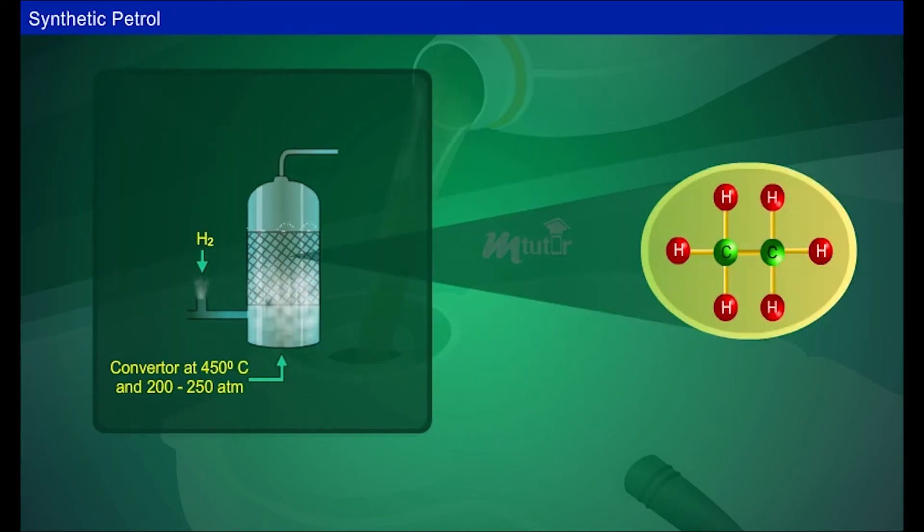Thus, the coal forms saturated hydrocarbons by hydrogenation. The formed hydrocarbons decompose to low boiling hydrocarbons at high temperature and atmospheric pressure.